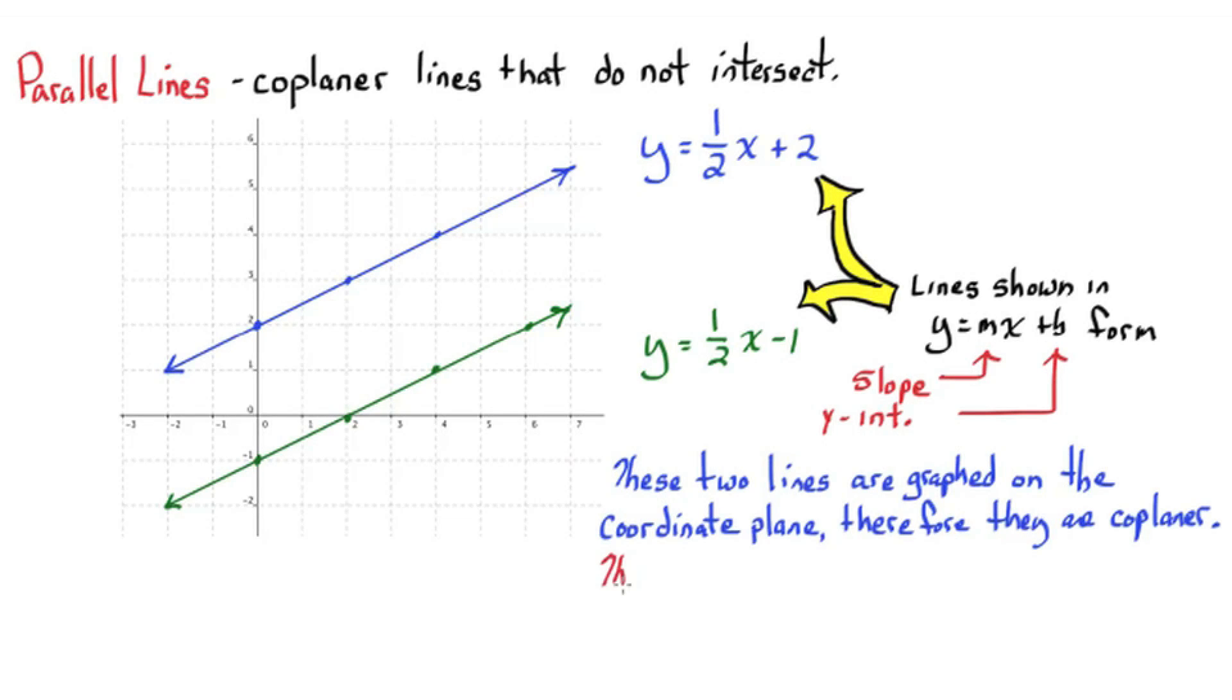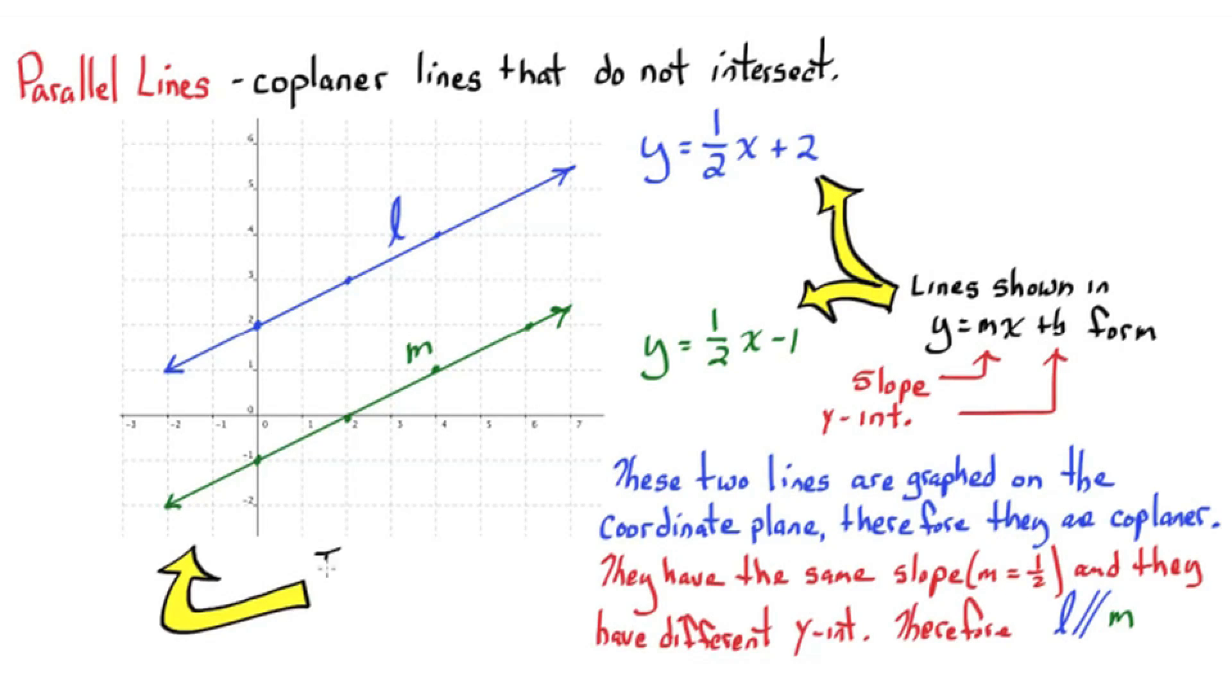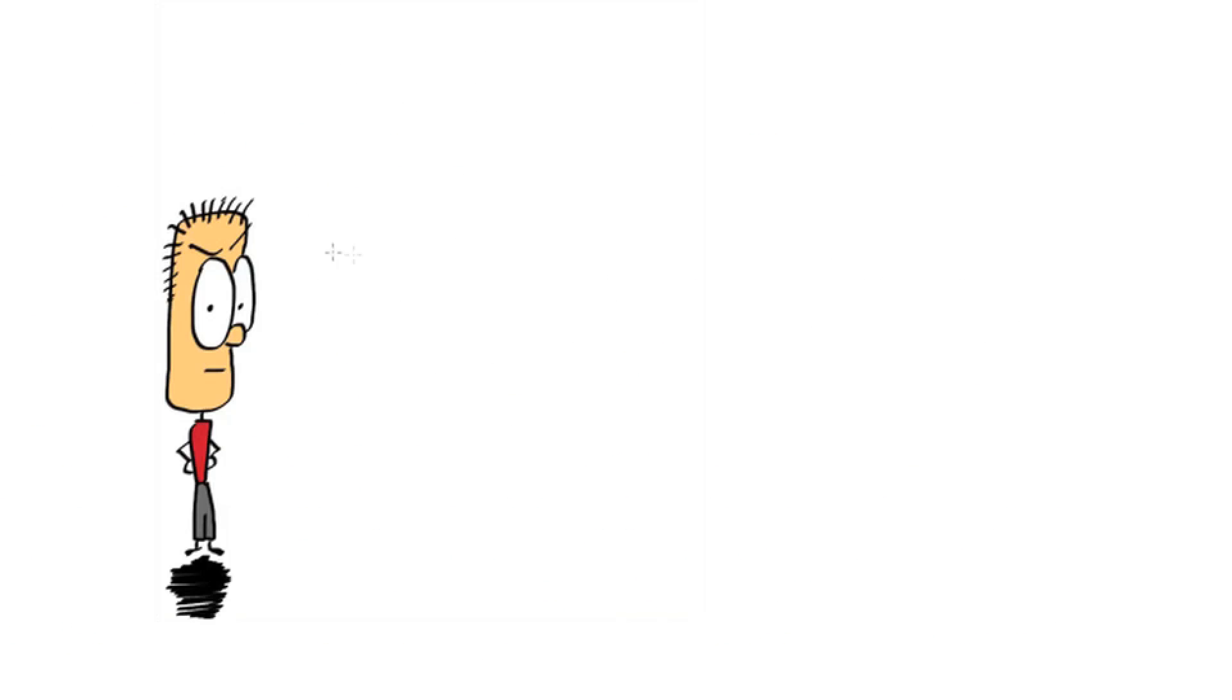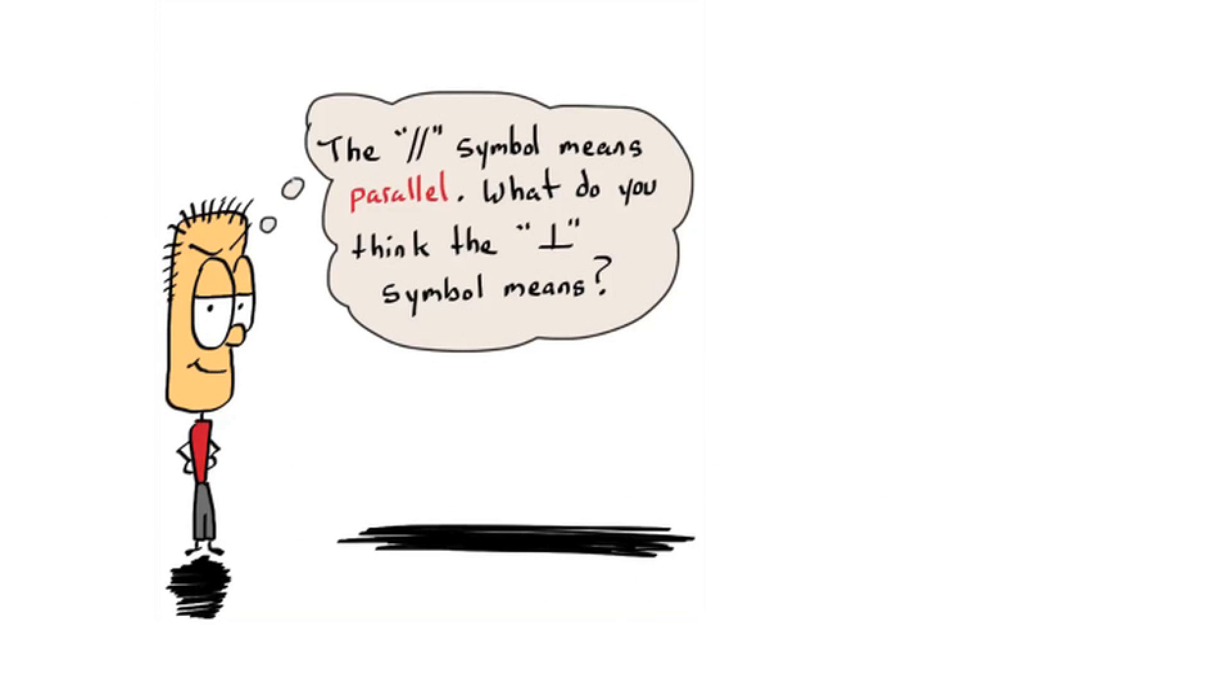Therefore, they are coplanar. They have the same slope, M equals one half, and they have different Y intercepts. Therefore, line L will be parallel to line M. These lines will not intersect.